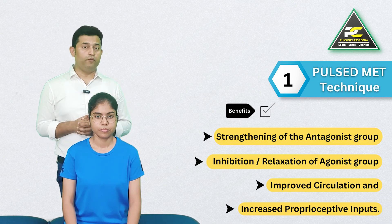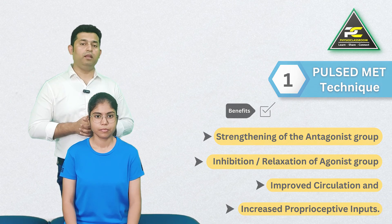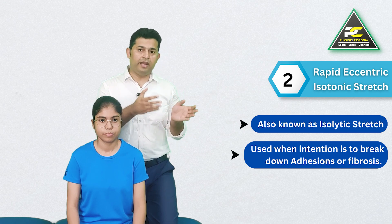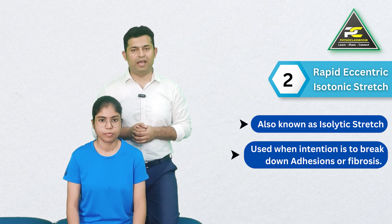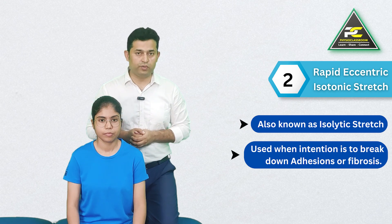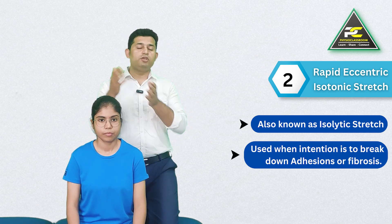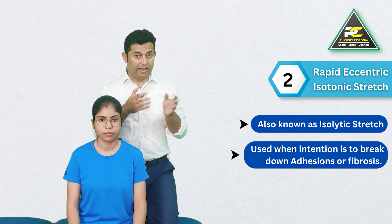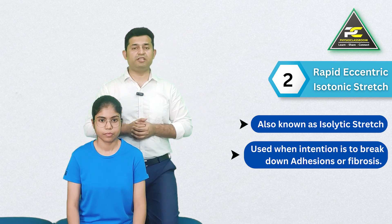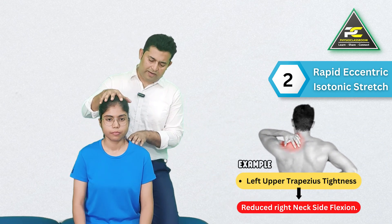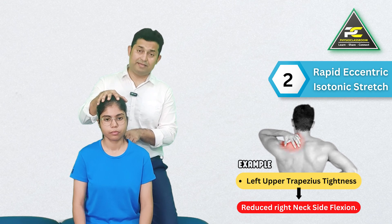The rapid eccentric isotonic stretch is often referred to as the isolytic stretch because it induces controlled tissue damage. A therapist chooses this form when the intention is to break down adhesion or fibrosis within the soft tissue. For this example, the left upper trapezius is again tight and shortened, and the therapist positions the head and neck into right side flexion.